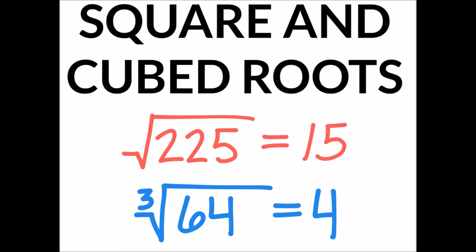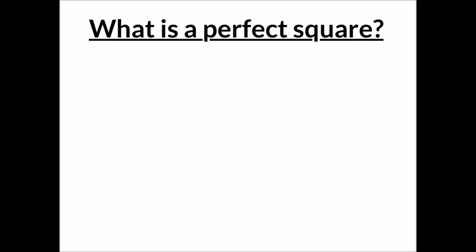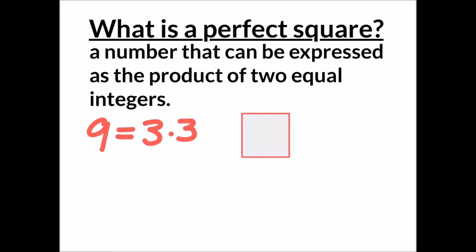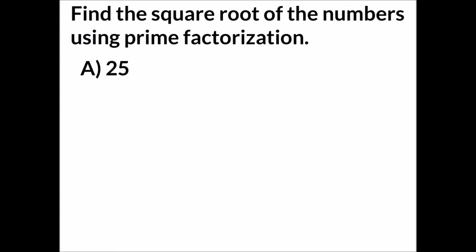This video will teach you how to find the square and cubed roots using prime factorization. To begin, we have to talk about what is a perfect square. A perfect square is a number that can be expressed as the product of two equal integers. For example, nine is a perfect square because we can rewrite that as three times three. We can also show that in a diagram of a square with equal side lengths of three — that's in two dimensions.